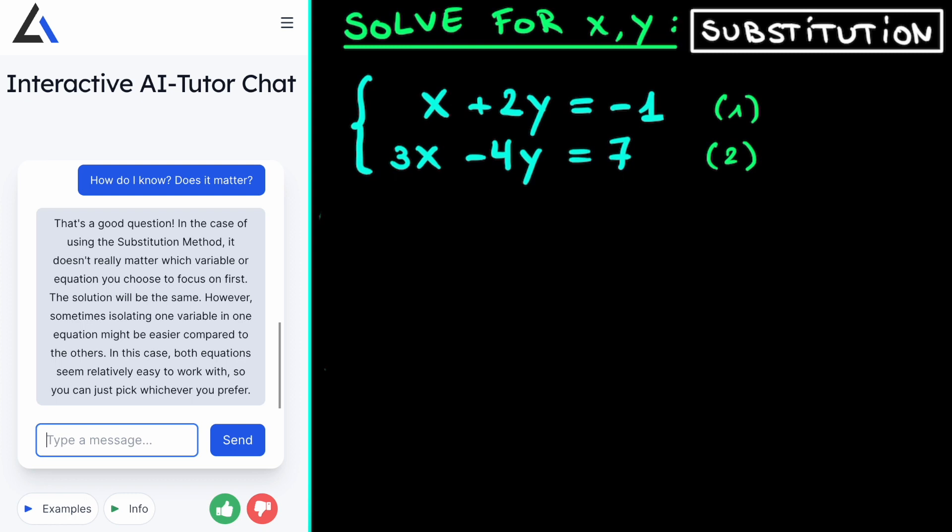Now for our example, we see that the first equation has an x without any cofactor in front of it, which means that we can isolate it by just bringing this plus 2y to the other side of the equality sign. So if we write this down, we get that for the first equation, we get x is equal to minus 1 minus 2y.